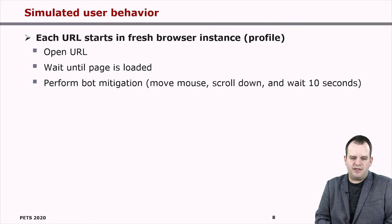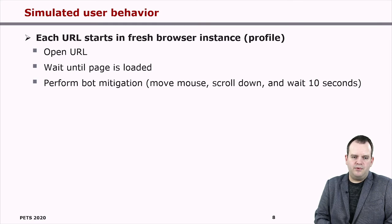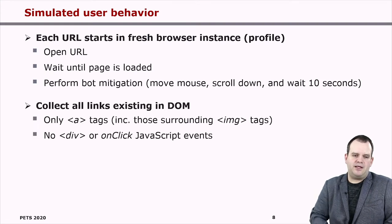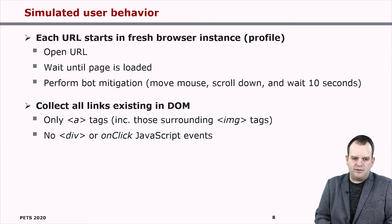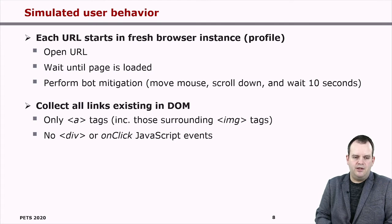To examine an individual website, we open it in Firefox and wait until the page is fully loaded. Once done, we perform some bot mitigation — we move the mouse around, scroll down, and wait for 10 seconds, because some websites load additional data after the main page is loaded, triggered by scrolling or mouse movement. We then collect all links from the DOM — basically all A tags, including those surrounding image tags. Links can be images or text. Other elements, such as div tags with an on-click JavaScript event, are not considered links since links are only A tags.